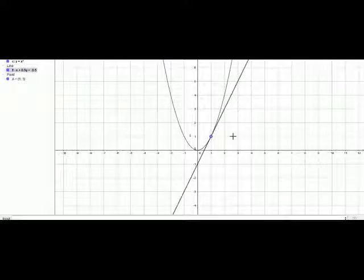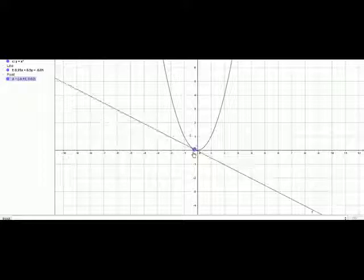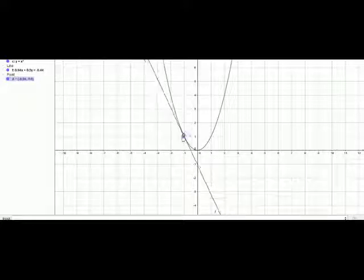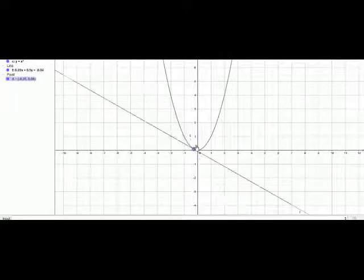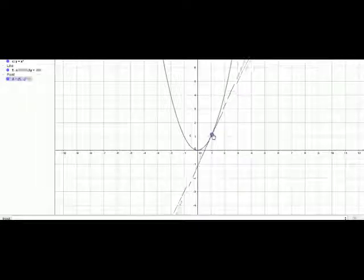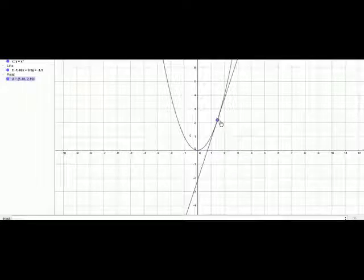As you can see on the screen, the tangent at A has been drawn to this parabola. Now, if you move this point A around, you realize that the tangent also moves along with it. It's simple because the tangent has been drawn to that particular point and is attached to that point wherever the point goes. Therefore, the slope of this tangent also varies as we change the position of point A.